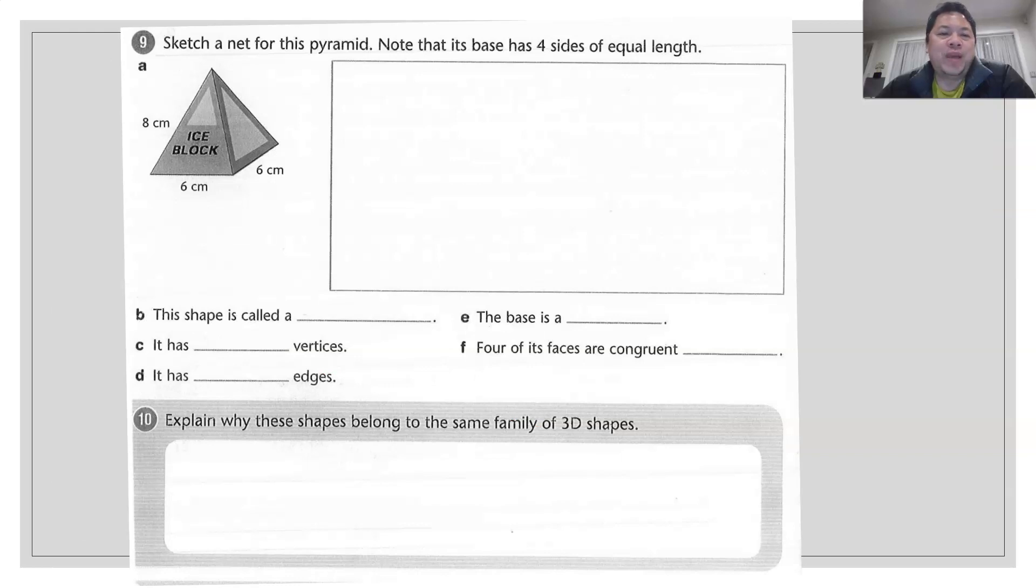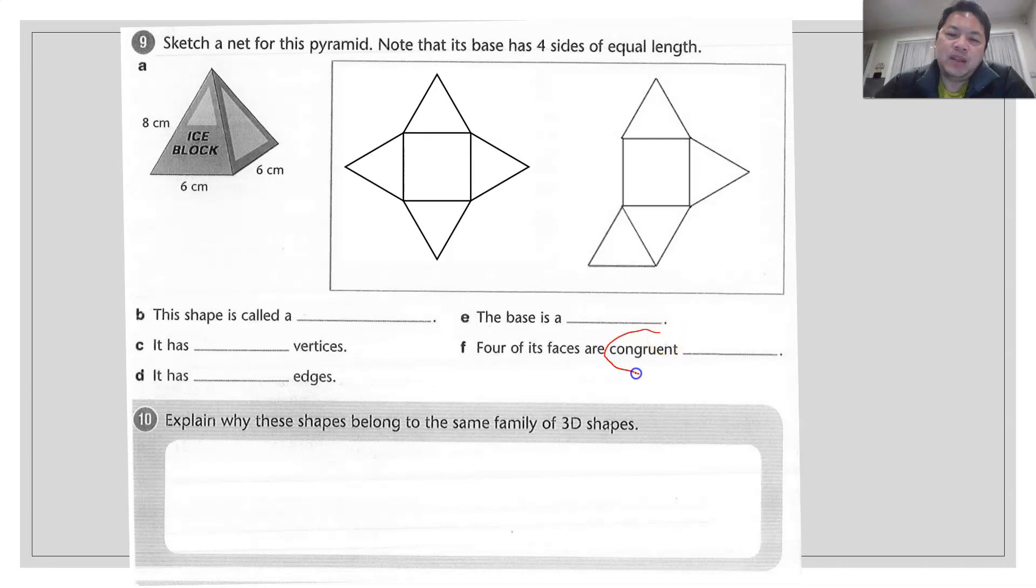Moving on to a square base pyramid. You're supposed to draw a net. I've actually drawn some for you. And there are more available. Do not copy mine. If you want to use, you can use one of it. And then why don't you investigate and draw another different one? Again, from here, you're supposed to write down the name of this shape, how many vertices, edges, and the base. What's so special about the base of this pyramid? And they say four of the faces are congruent. The meaning of congruent is they are equal in size.